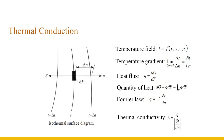Thermal conductivity refers to, under stable conditions, when a 1-meter thick object has a temperature difference of 1 degree Celsius on both sides, the heat conducted through an area of 1 square meter within 1 hour. The greater the thermal conductivity, the stronger the thermal conductivity of the material. In general, the thermal conductivity of metals is the largest, followed by non-metals and liquids, and gases are the smallest. Due to the low thermal conductivity of air, stagnant air is a good thermal insulator. If the material contains pores, the thermal conductivity will be greatly reduced; therefore, insulation materials are made porous or loose. Thermal conductivity is related to temperature; in engineering calculations, the arithmetic mean value within the temperature range is often taken as a constant.